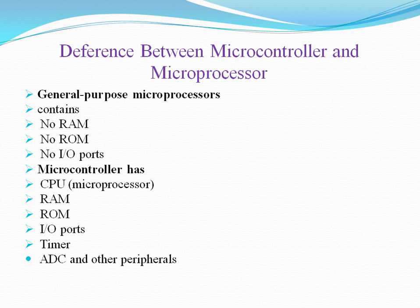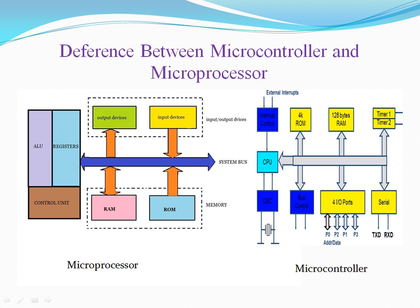But if you talk about a microprocessor, it does not have any kind of RAM, ROM, or input/output ports — you have to connect all of these externally to the microprocessor. So we can say that a microprocessor is the same as a single CPU, while a microcontroller is like a whole computer on a single IC. In a microcontroller everything is installed in it.